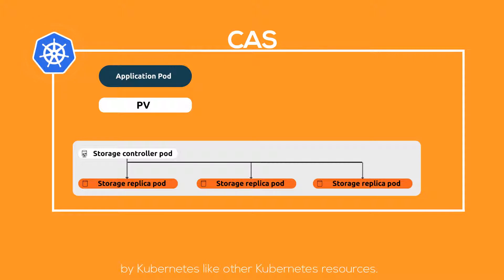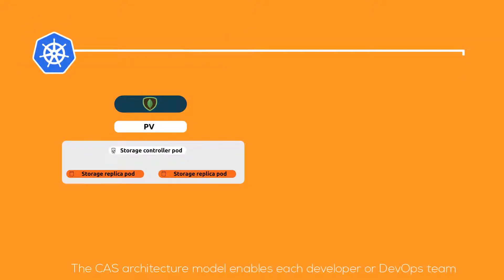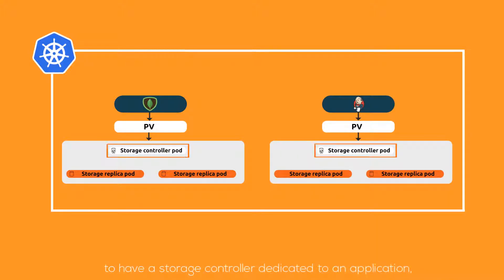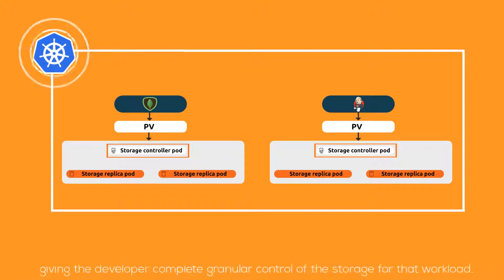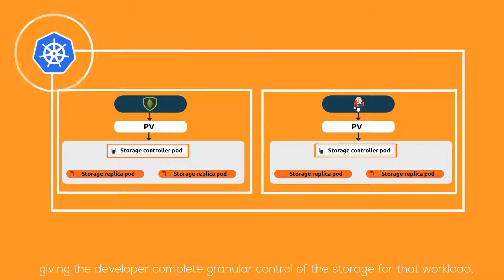like other Kubernetes resources. The CAS architecture model enables each developer or DevOps team to have a storage controller dedicated to an application, giving the developer complete granular control of the storage for that workload.